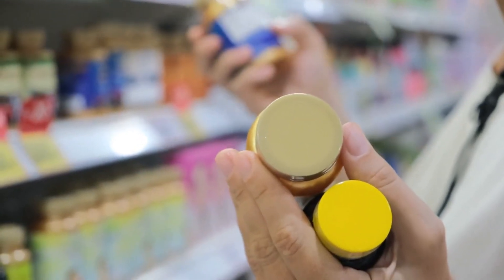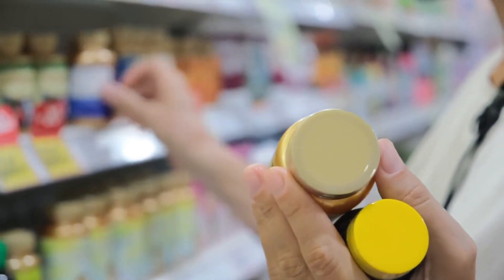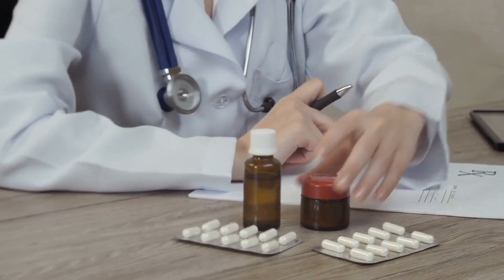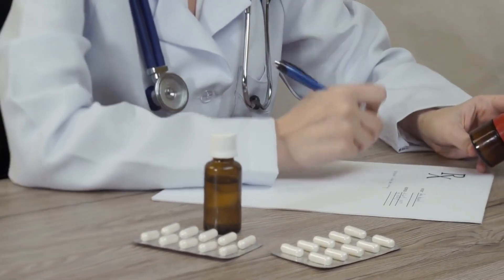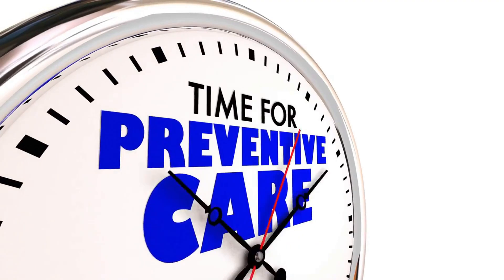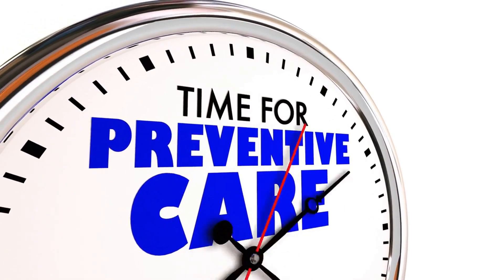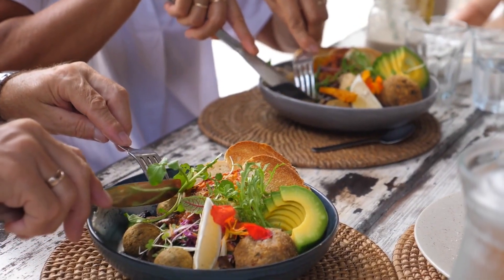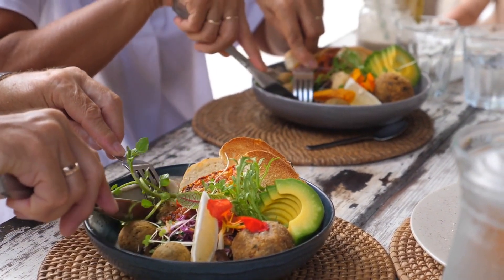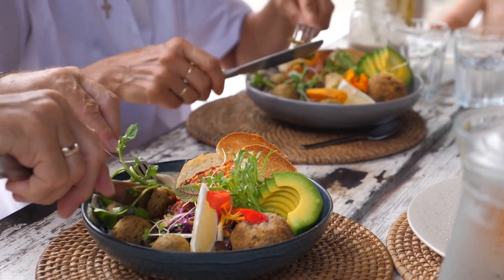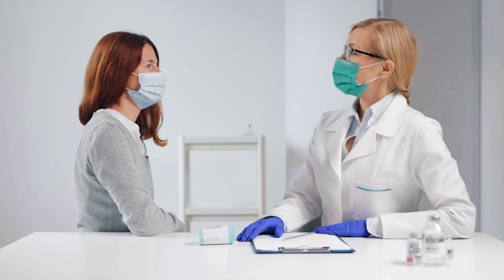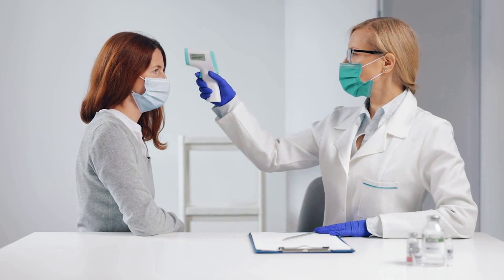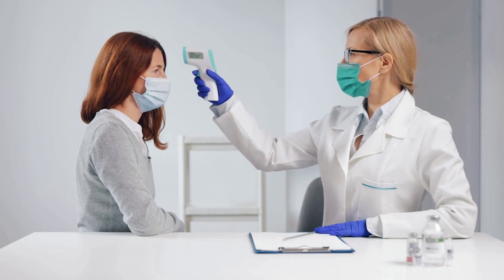If you're interested in trying any of these vitamins, we've provided links in the description below for your convenience. Remember, always consult with a healthcare professional before starting any new supplement regimen. Prevention and early detection are vital in managing fatty liver disease. By adopting a healthier lifestyle, including a balanced diet and regular exercise, you can significantly reduce your risk. Monitoring your liver health through regular checkups and blood tests can also help with early detection, allowing you to take action before the condition progresses.